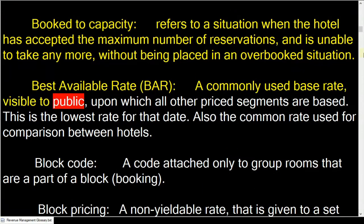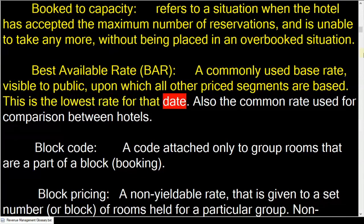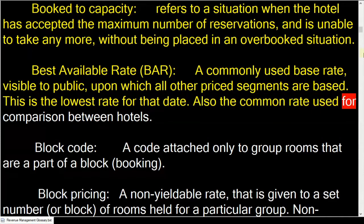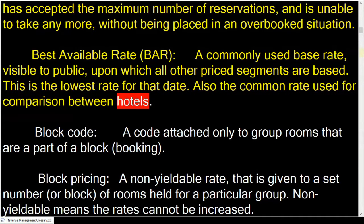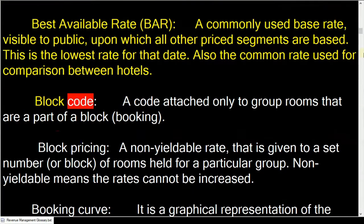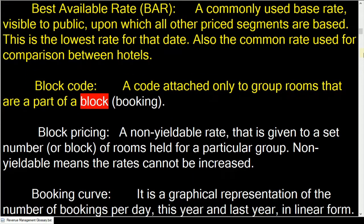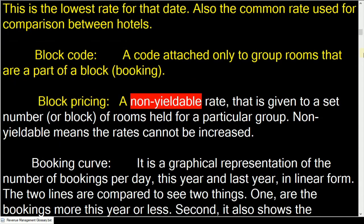Best available rate (BAR) is a commonly used base rate visible to the public, upon which all other priced segments are based. This is the lowest rate for that date and the common rate used for comparison between hotels.